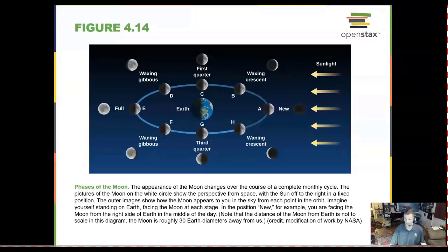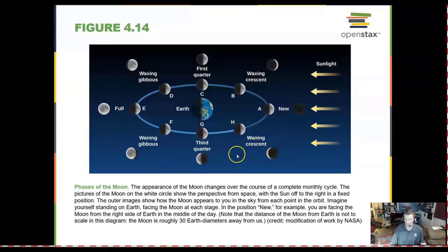Your lab for Module 2 will look at phases of the moon. Here we see a classic diagram of the different phases — there are eight of them that the moon goes through in a month. You will want to refer to this diagram as you do the moon phases lab.